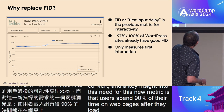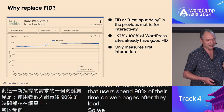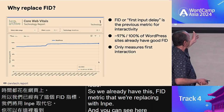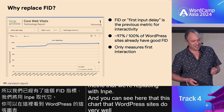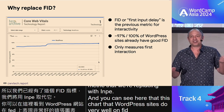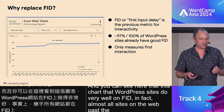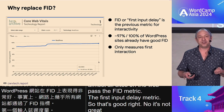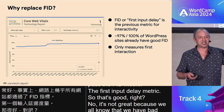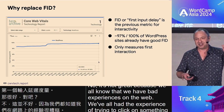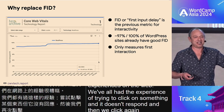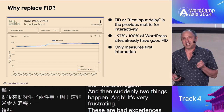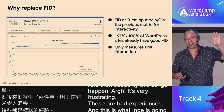We already have the FID metric that we're replacing with INP. You can see in this chart that WordPress sites do very well on FID. In fact, almost all sites on the web pass the FID metric — the first input delay metric. But it's not great, because we all know that we have bad experiences on the web. We've all had the experience of trying to click on something and it doesn't respond, and then we click again, and then suddenly two things happen. It's very frustrating. These are bad experiences, and this is what INP is going to help us capture, isolate, find, and then fix.